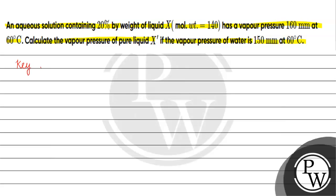The key concept for this question is Raoult's Law. Raoult's Law states that the vapor pressure of any component at a given temperature is basically equal to the product of the mole fraction of that component in the solution and the vapor pressure of the component in the pure state. So PA equals mole fraction of A into P°A.